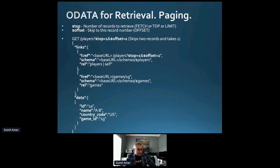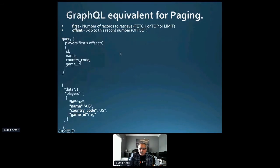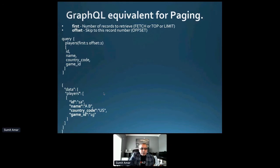For pagination: in OData, you use $top=1 and $skip=2 — skip two records and retrieve one. In GraphQL, the equivalent syntax is 'first: 1, offset: 2' with no comma between them — it's just the syntax you get used to. You specify the fields you want, and the result is very similar to OData. The benefit is that whatever you express in the request is predictably reflected in the response.